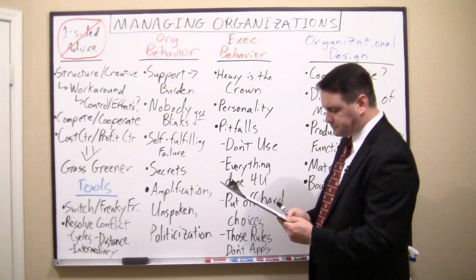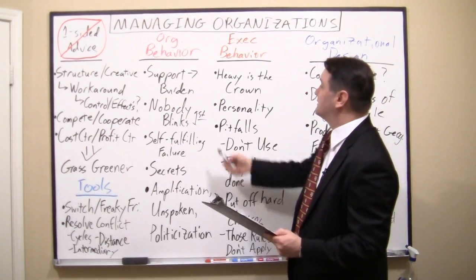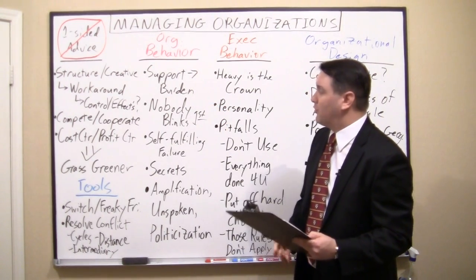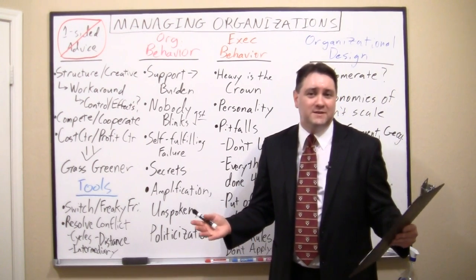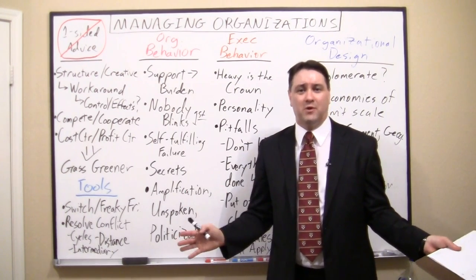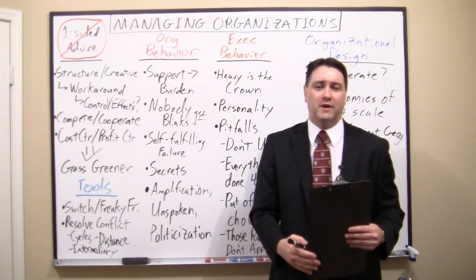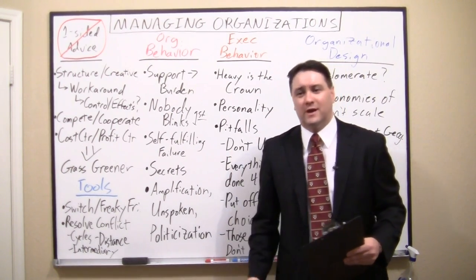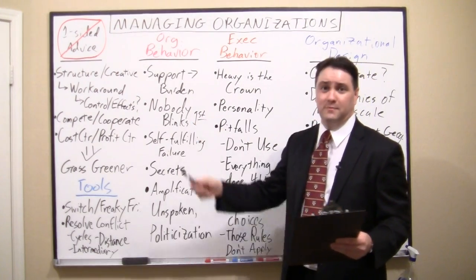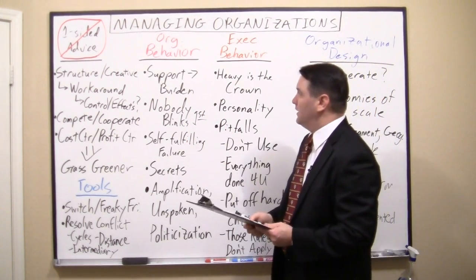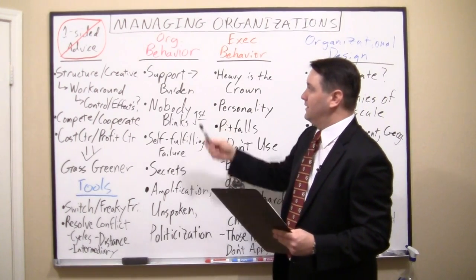Now let's talk about organizational behavior — the term academics tend to give this field. One counterintuitive effect is that support can end up being a burden. IT staff, for example, may become very conservative: if there's a security breach it's their problem, so they keep adding rules — your password has to change every three hours, include a capital and lowercase letter, and so on — until it's hard to function. This can also happen with HR and the legal team. They don't feel the effects on the business; they only feel their own divisional pain, and they become a burden on others.